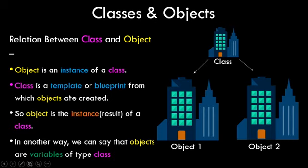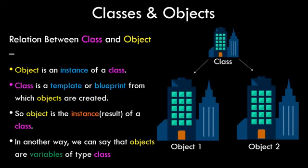Class is a template or blueprint from which objects are created, and in order to create an object you have to have a class. An object is an instance — one entity that is one result of a class. Another way to look at it: objects are variables of type class. In the procedural approach we have built-in variables like integer, float, string, character. Consider a class as a custom data type that you create — it will have a bundle of variables and methods that operate on them — and the object is essentially the variable name.